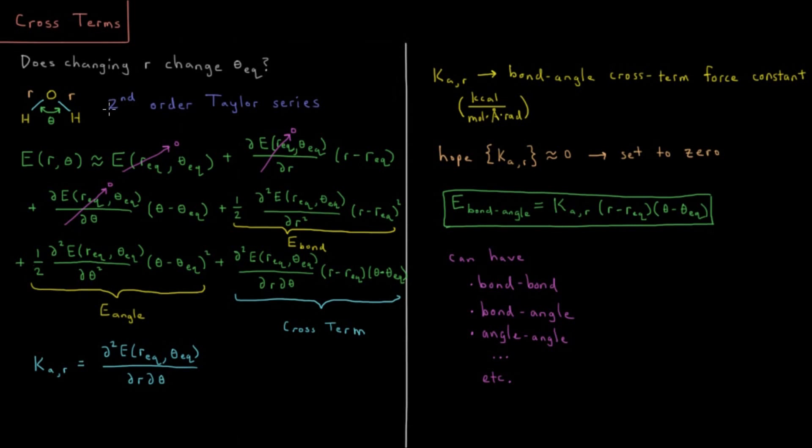So we're going to do a second order Taylor series on the energy of our molecule in terms of the bond length and the bond angle. Let's say we have E of R theta. Well that's approximately E of R equilibrium, theta equilibrium, so there's the equilibrium kind of structure of the molecule. And we usually define that to be zero, because usually at R equilibrium we have the bond energy as zero. Usually at theta equilibrium we have the bond, the angle energy as zero. So this could be just defined to be zero.